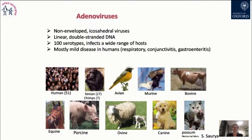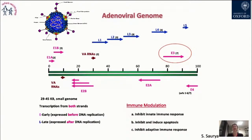What are adenoviruses? They are non-enveloped icosahedral viruses with linear double-stranded DNA. There are more than 100 serotypes existing worldwide, infecting a wide range of hosts. Human serotypes mostly cause mild disease — colds, conjunctivitis, or mild gastroenteritis. To use them as a vaccine platform, we genetically modify the genome. The green bar represents the adenovirus genome; in pink are the early proteins, which are the first to be translated upon infection and are essential for expressing the late proteins — the blue region — which are expressed after replication.